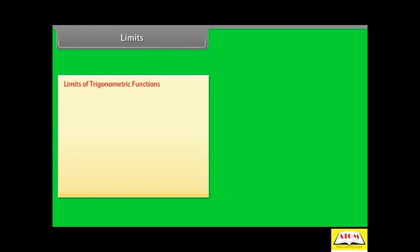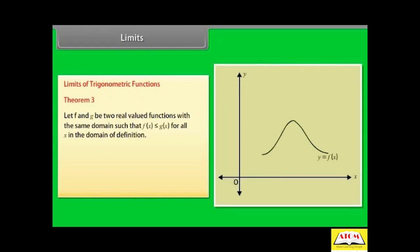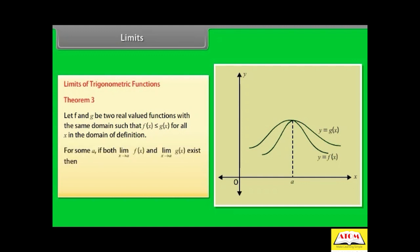Limits of trigonometric functions. Theorem 3. Let f and g be two real-valued functions with the same domain such that f(x) ≤ g(x) for all x in the domain. For some a, if both limit x→a of f(x) and limit x→a of g(x) exist, then limit x→a of f(x) ≤ limit x→a of g(x).